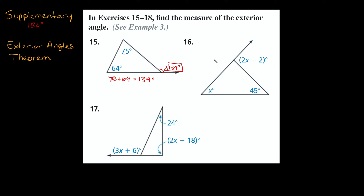Let's go to the next example, number 16. We have two interior angles: X degrees and 45 degrees, and the exterior angle is 2x minus 2. The two interior angles are not next to the exterior angle, so we can use the exterior angles theorem. That means x plus 45 should equal 2x minus 2.